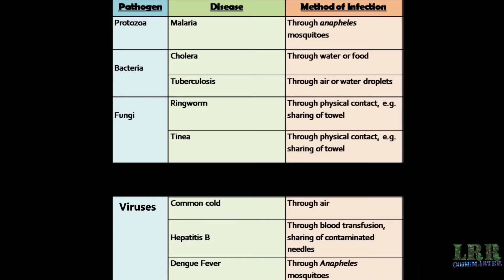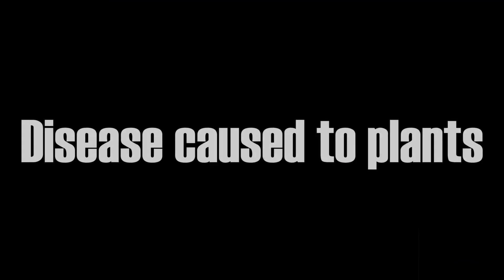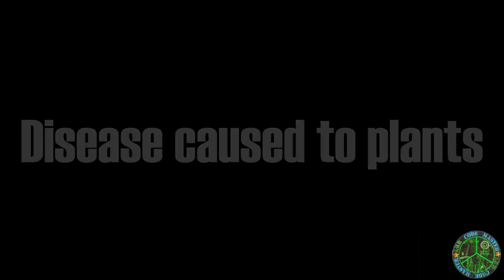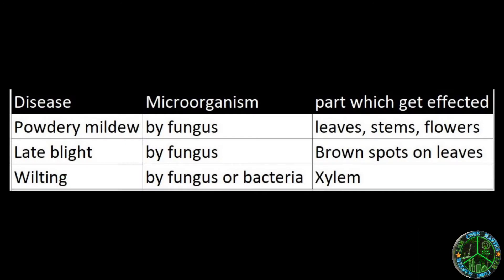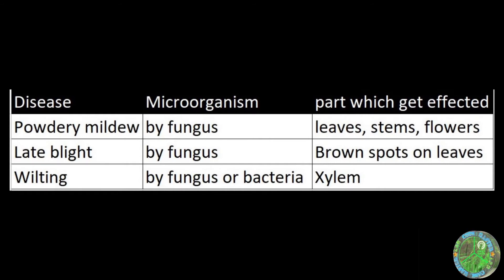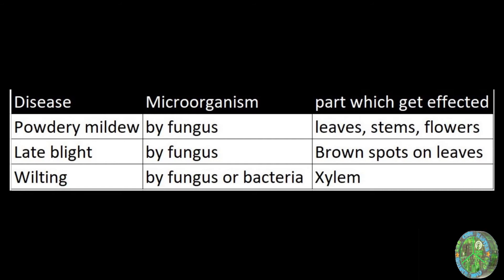Dengue fever is also a virus which infects organisms through mosquitoes. Diseases caused to plants: powdery mildew is a disease caused by fungus — leaves, stems, and flowers get affected. Leaf blight is also caused by fungus and leaves get affected. Wilting is caused by fungus or bacteria and the xylem is the part which gets affected.